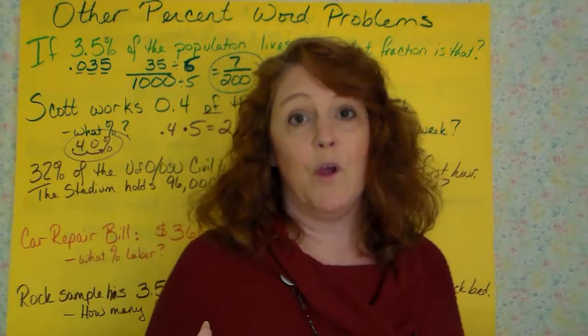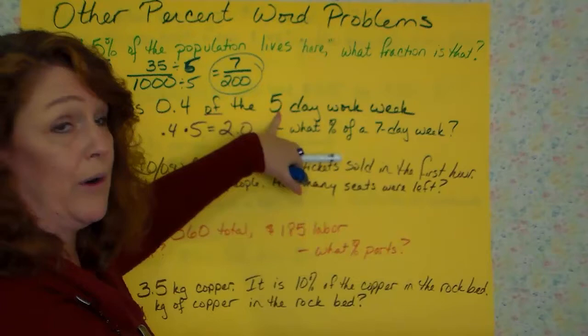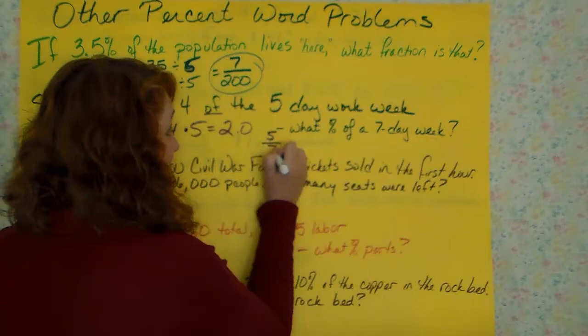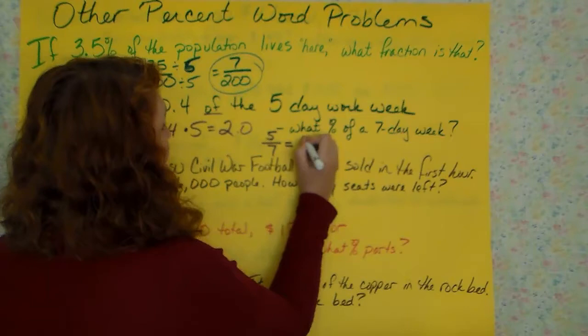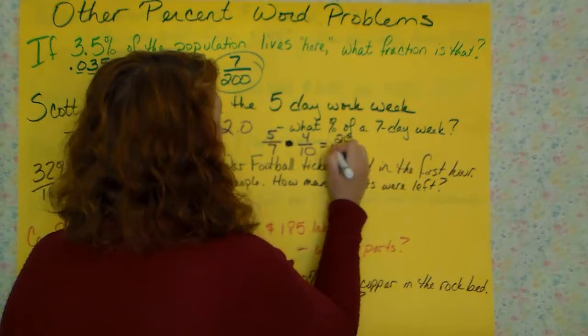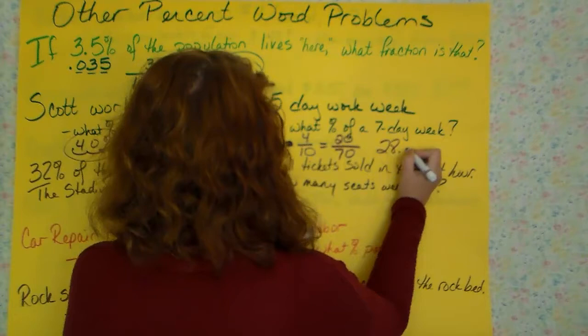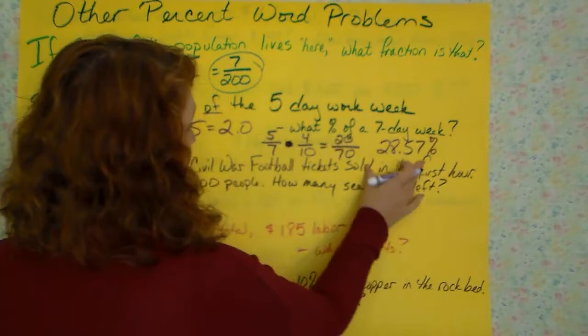Then they ask you, what percentage of the 7-day work week did he work? Well, you know that he worked 0.4 of the 5-day work week. So, 5 of the 7 days that he worked is 40%, 4 over 10. I'm sorry, that's multiplying. You are going to multiply these straight across. You're going to get 20 over 70, and you're going to put 20 divided by 70 in a calculator, and you're going to get 28.57% of the work week.